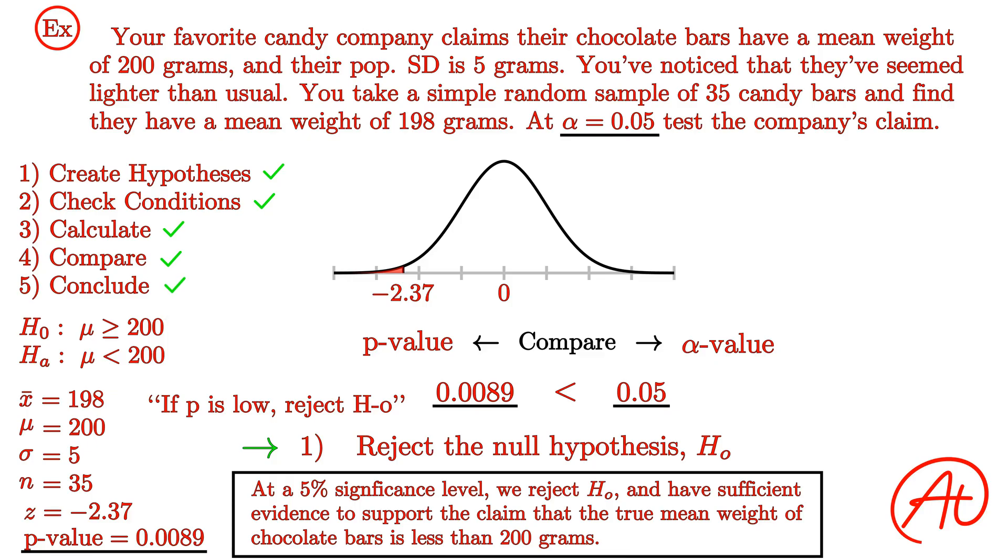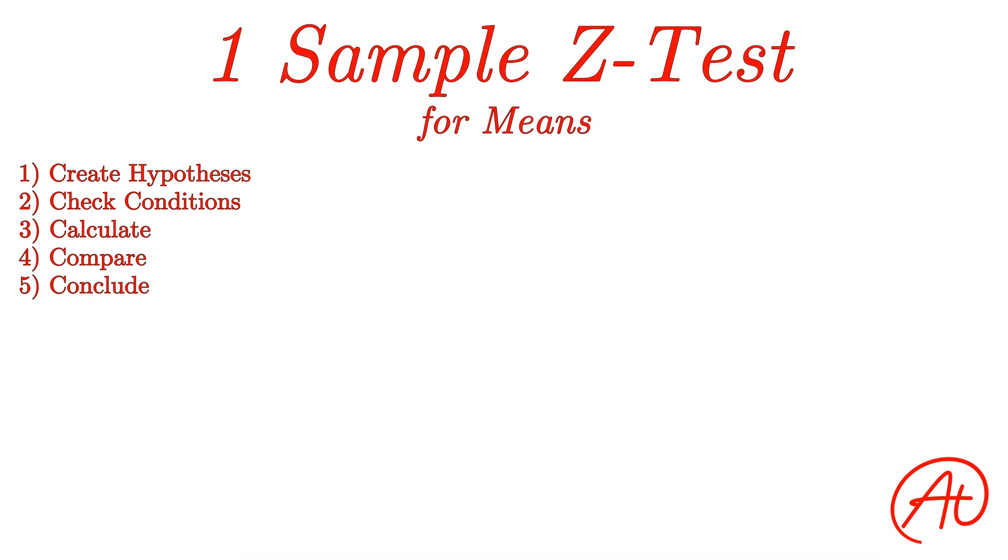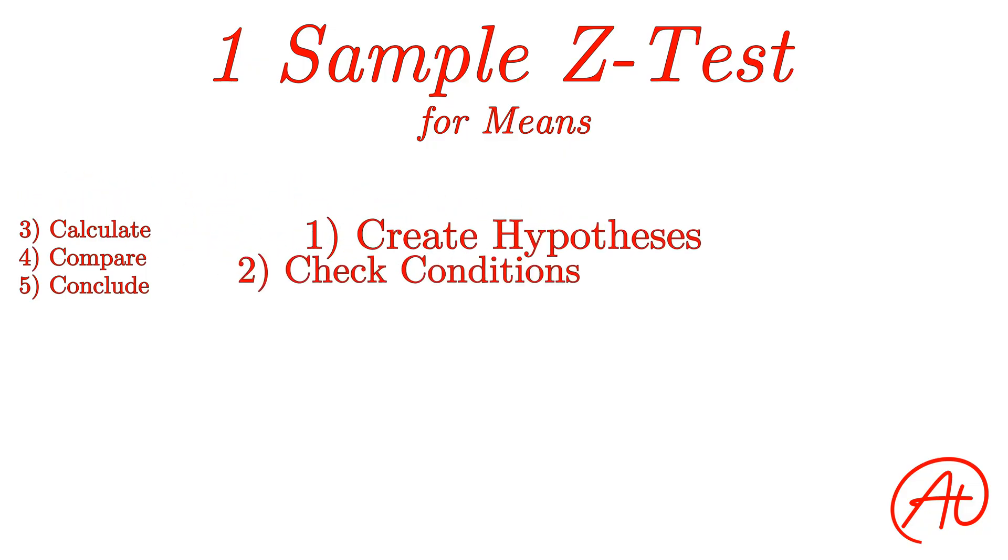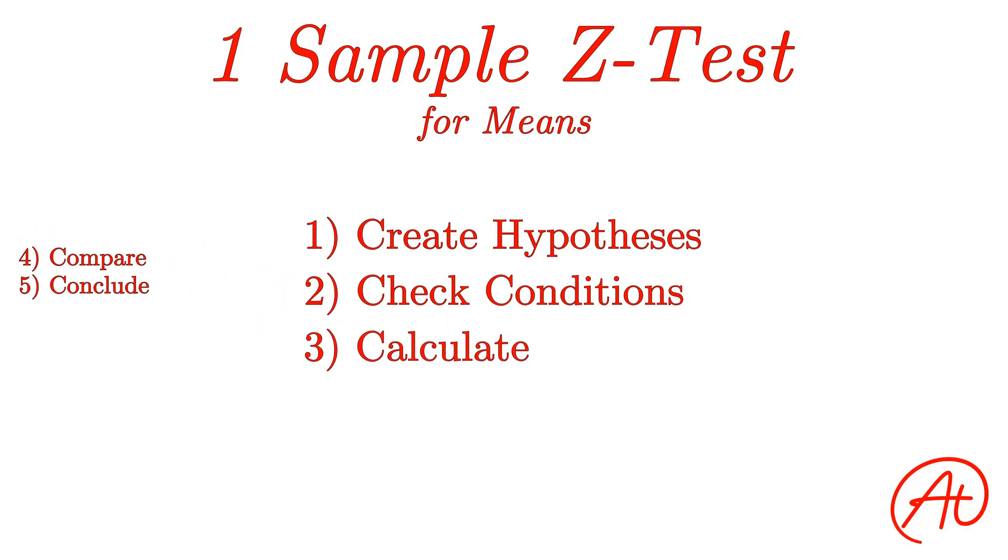Okay, so that's how you do a one-sample z-test for means. If any of those steps were confusing, don't worry. I'd encourage you to go back and watch each step and really internalize what we did for each of the five steps in our process. This is going to be really important as we're going to follow this five-step process for every single type of hypothesis test problem. First, we create our hypotheses. Then we check conditions, then calculate our test statistic and p-value, then compare those values to our critical value or alpha value, and then finally conclude based on our findings.